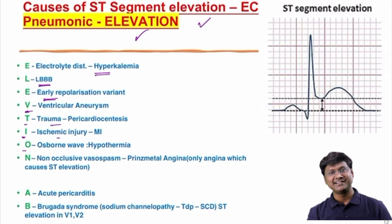O stands for the Osborne wave, which is seen in hypothermia. N stands for non-occlusive vasospasm, seen in cases of Prinzmetal angina. A stands for acute pericarditis. B stands for Brugada syndrome.